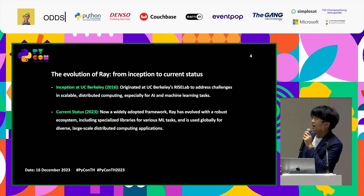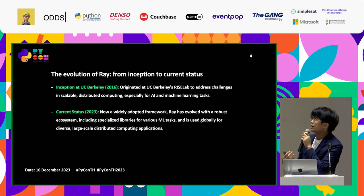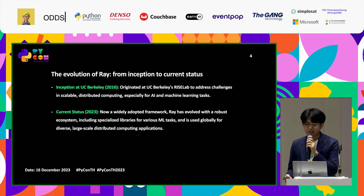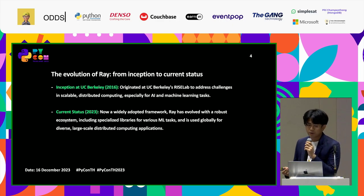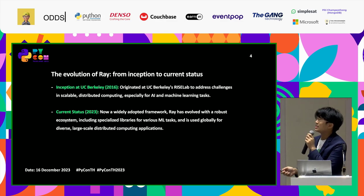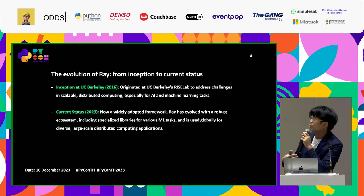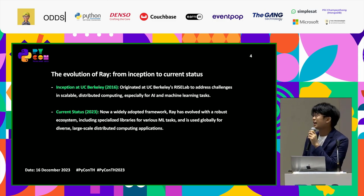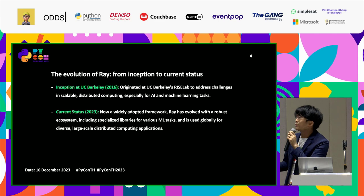Next is the history of Ray. Ray was founded at UC Berkeley in the RISELab. Its first purpose was to address challenges in scalable and distributed computing, especially for AI and machine learning tasks. Now Ray is a widely adopted framework with a robust ecosystem, including specialized libraries for various ML tasks, used globally for diverse large-scale distributed computing applications.